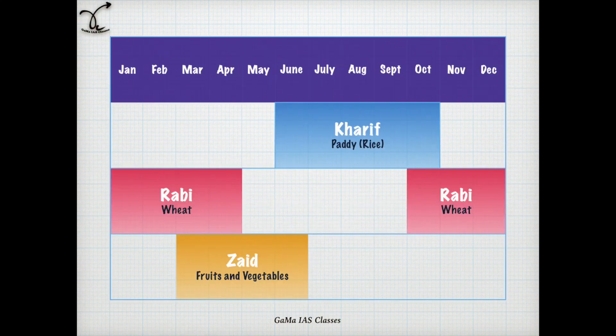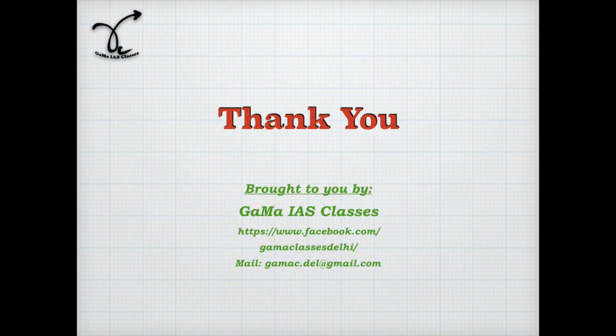To sum up, you can have a look at the diagram representing the crop duration of various crops and their major products. This video was brought to you by Gama IES Classes. Thank you for watching. Please like, subscribe, and share to keep receiving important updates. Have a good day.